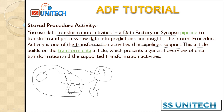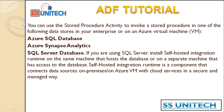This builds on the Transformed Data article which presents a general overview of data transformation and the supported transformation activities. You can use the Stored Procedure Activity to invoke a stored procedure in one of the following data stores in your enterprise or on an Azure VM: Azure SQL Database, Azure Synapse Analytics, and SQL Server Database. If your destination is any one of these, we can use this Stored Procedure Activity. If you are using SQL Server, you need to install the self-hosted Integration Runtime, which we have already discussed in previous videos.